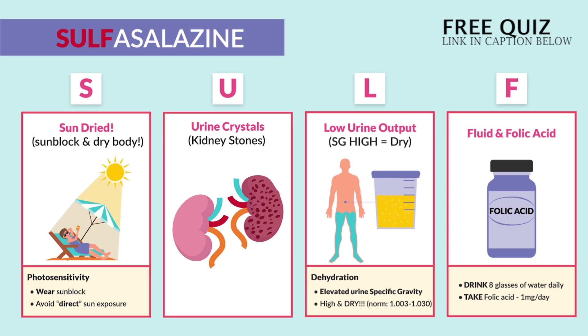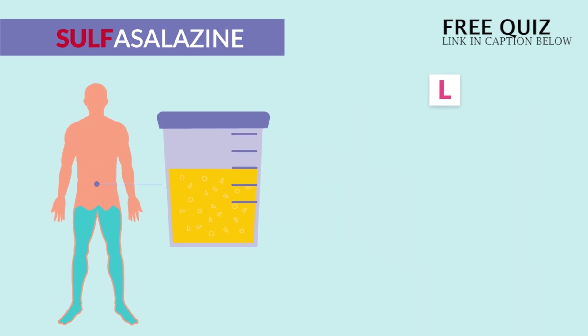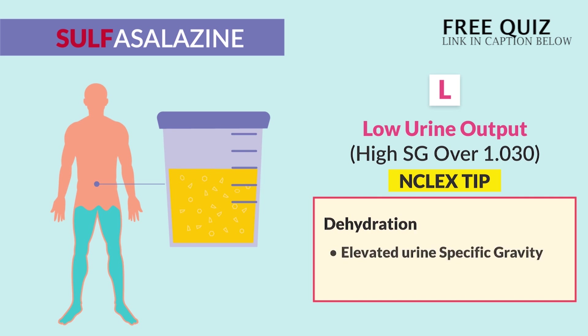And since sulfas really dry out the body, they create U — urine crystals, or basically kidney stones. And L — low urine output with high specific gravity over 1.030. That was a huge NCLEX tip, guys. Write that down. Elevated urine specific gravity. Remember, if urine gravity is high, then the body is dry.